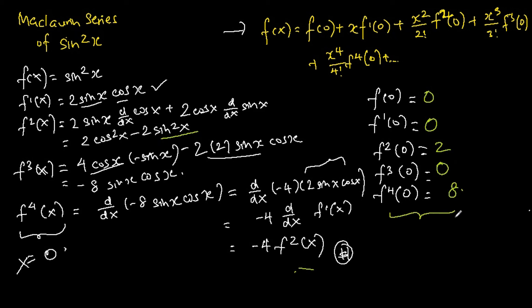Once we are able to find out all these, we can actually find out the Maclaurin series of sine squared x. So the Maclaurin series of sine squared x is, up to the x to the power of four term, what will it be?